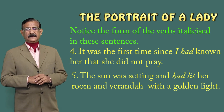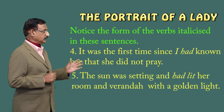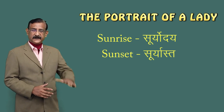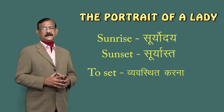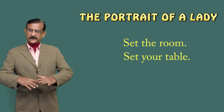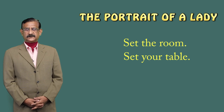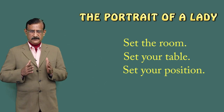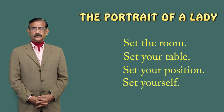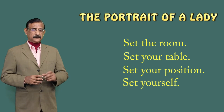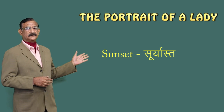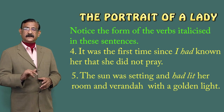Fifth sentence: 'The sun was setting and had lit her room and veranda with a golden light.' Sunrise means suryoday, sunset means suryaast. 'Sun was setting' — sooraj dhal raha tha. The setting sun's golden light had illuminated her room and veranda. Notice: 'was setting' uses 'was' because the action was continuous in the past; 'had lit' uses 'had' because the lighting was already completed.